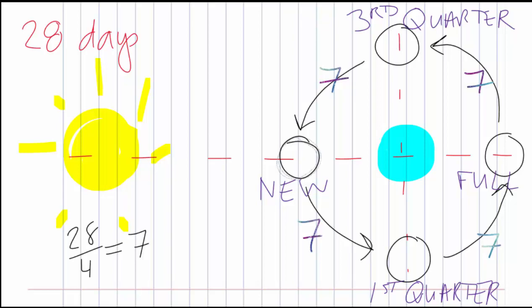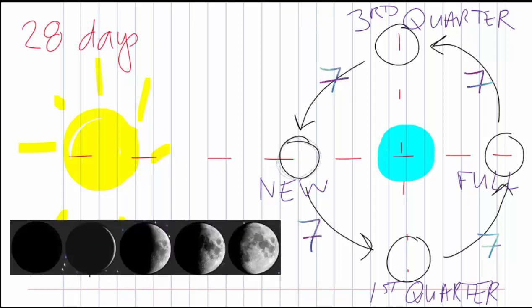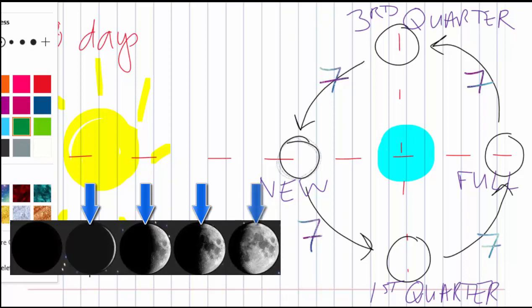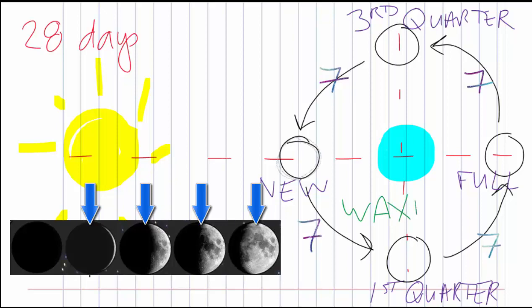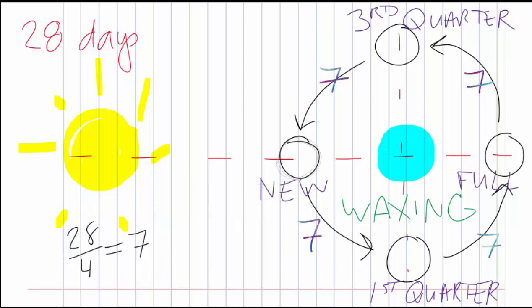When we look at the moon, the right side always tells us the future. If the right side is light, the moon is getting lighter every day. If the right side is dark, the moon is getting darker every day. At a new moon, we look up and see no light at all — we're not seeing any sunlight reflected. Every day after that, the right side starts lighting up a little more. We call that waxing — wax on.